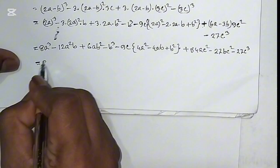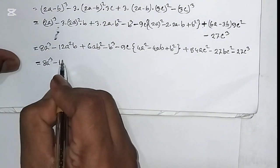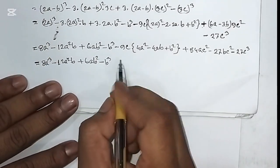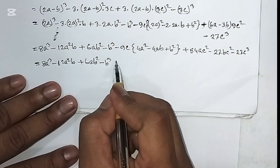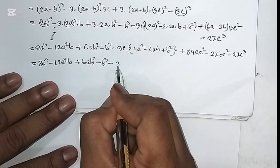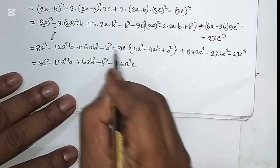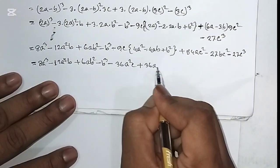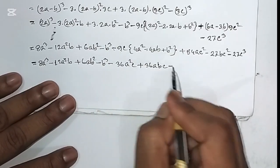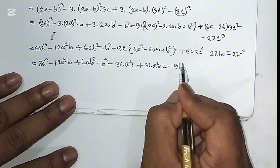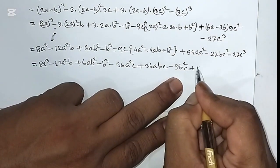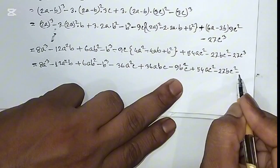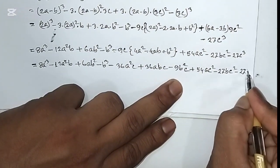Equals 8a³ minus 12a²b plus 6ab² minus b³, minus 36a²c plus 36abc minus 9b²c, plus 54ac² minus 27bc² minus 27c³.